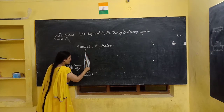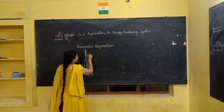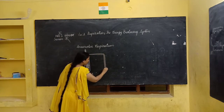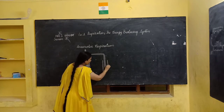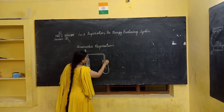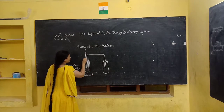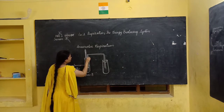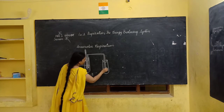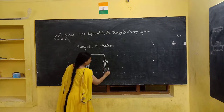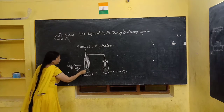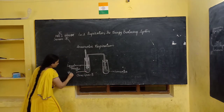We insert that delivery tube into another test tube which contains lime water. You have lime water in the second test tube, and here you have the glucose solution. This is the setup.